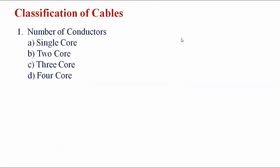The classification of cables is based on four methods: based on conductor, based on operating voltage, based on application, and methods of improving dielectric stress. Based on the number of conductors, cables are classified as single-core, two-core, three-core, and four-core cable.